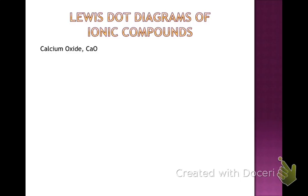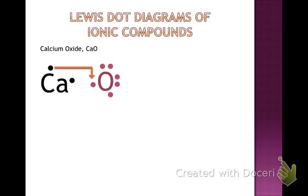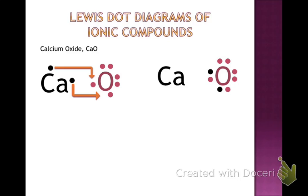Now ionic compounds — starting with calcium oxide. The formula is CaO: one calcium, one oxygen. We show the oxygen and the calcium, and since it's an ionic compound, the electrons are transferred from the metal to the non-metal — from calcium to oxygen. We show one electron going from calcium to oxygen, then another. Since it's ionic, we form ions, so we draw each ion with its valence electrons. Calcium is an ion with a plus 2 charge; oxygen is an ion with a minus 2 charge. Since charges balance, it's a one-to-one ratio.